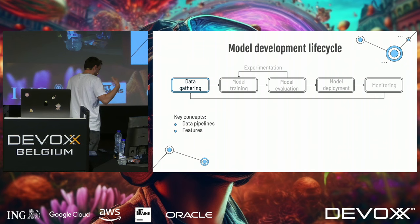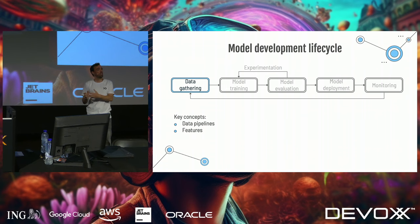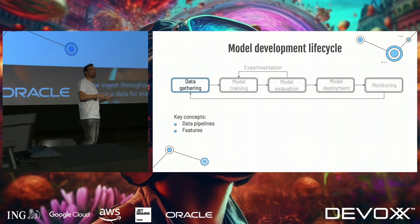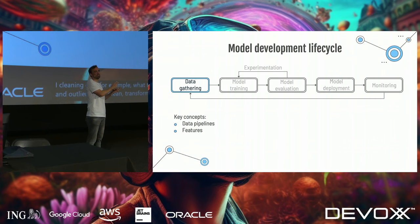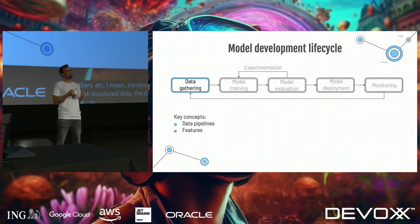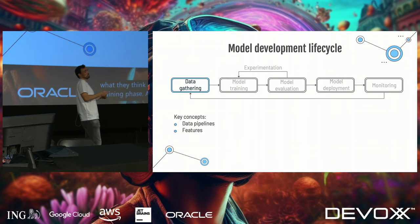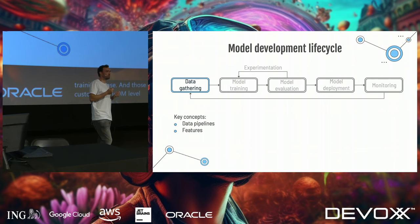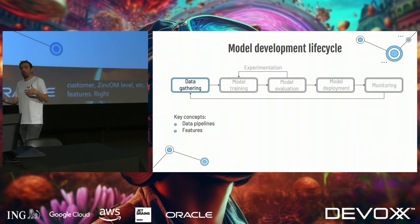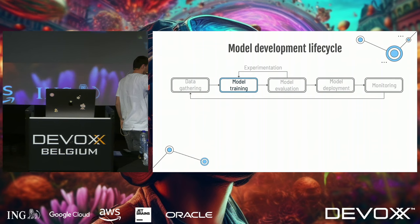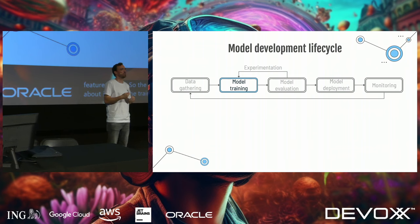The first step is data gathering, typically done in what we call data pipelines: we ingest raw data, transform it — like cleaning data, handling missing values and outliers — and convert it into structured data. Out of that structured data, the data scientist picks elements they think are important for the training phase, such as the age of a customer or their income level. Those elements are what we call features. The next step is training: you have an algorithm try to detect what the logic and patterns are for you.